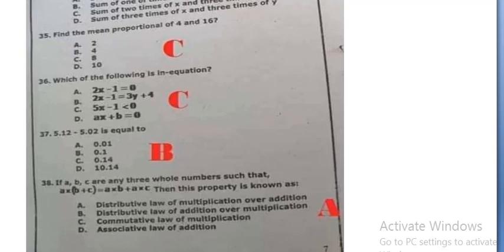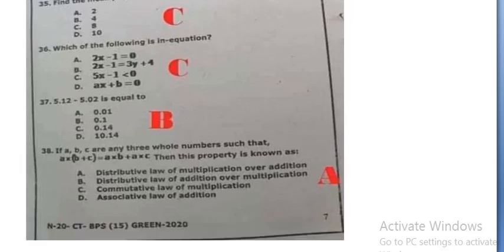If A, B, C are any three whole numbers so that A into B plus C is equal to A multiply B plus A multiply C, then this property is known as distributive law of multiplication over addition, option A.